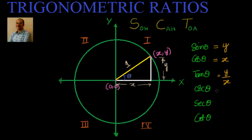We know that cosecant theta is nothing but 1 by sin, or hypotenuse by opposite, so that is 1 by y. Similarly, secant theta is nothing but 1 by cos, which is equal to 1 by x. And cotangent theta equals 1 by tan, which is nothing but x by y.